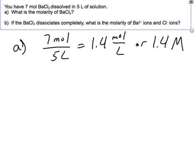So that's easy enough. Now the second question is, what is the molarity of Ba²⁺ and Cl⁻ ions? So one way to look at this is to see BaCl₂, when it dissolves in water, will dissociate into Ba²⁺ and 2Cl⁻.